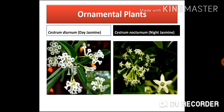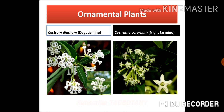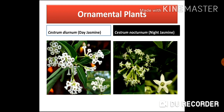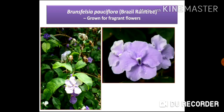The first ornamental plants shown are day jasmine and night jasmine. The botanical name of day jasmine is Cestrum diurnum and night jasmine is Cestrum nocturnum — different species but the same genus, Cestrum. These Cestrum species are planted in gardens and parks for their beautiful, fragrant, and attractive flowers.